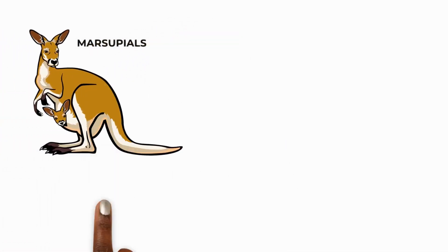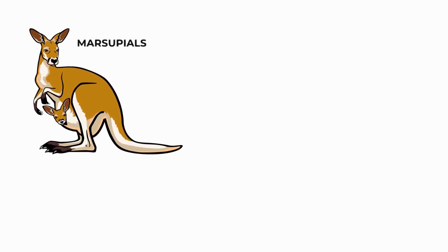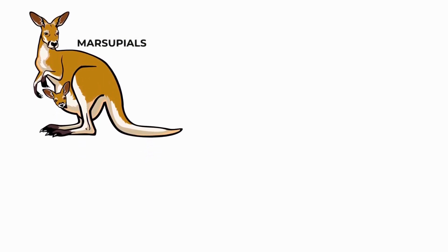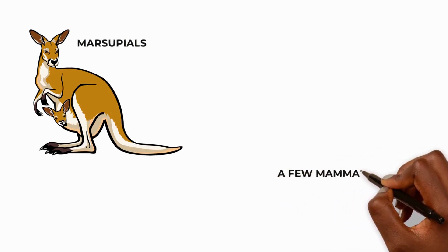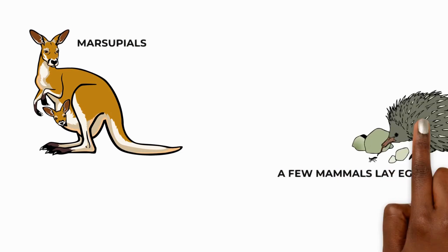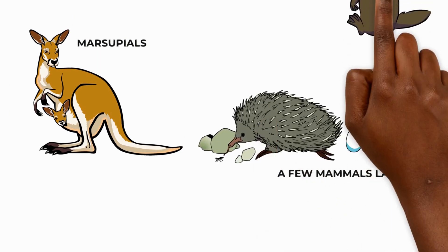Marsupials are mammals such as kangaroos that give birth to live young that are still in the very early stages of development. A baby marsupial is called a joey. A few mammals lay eggs rather than give birth to live young. An example of an egg laying mammal is an echidna or a duck-billed platypus.